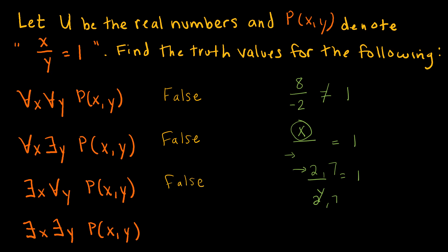And the last one: there exists an x and there exists a y, in the real numbers, such that x divided by y equals 1. All I have to do is show one example, because it's an 'exists' question. Let x equal 4 and y equal 4 — and all of a sudden I have a true statement. All I have to do is show that there is one such set of numbers x and y that exists, and 4 divided by 4 equals 1 works just fine.